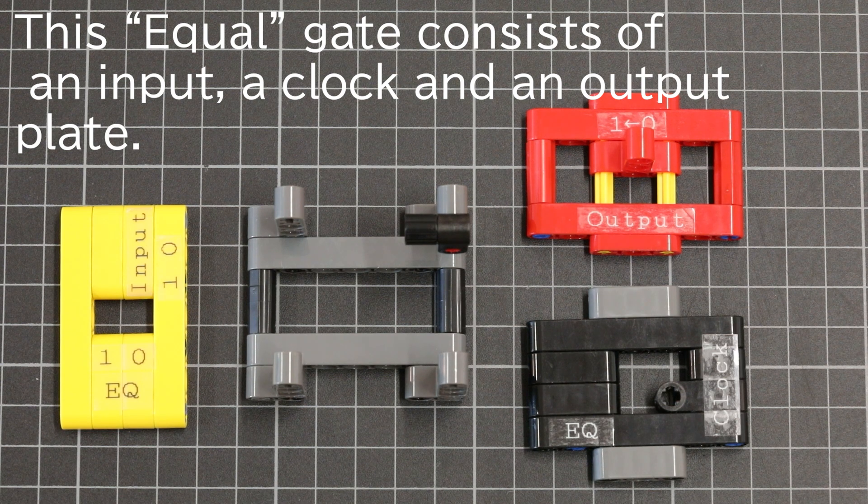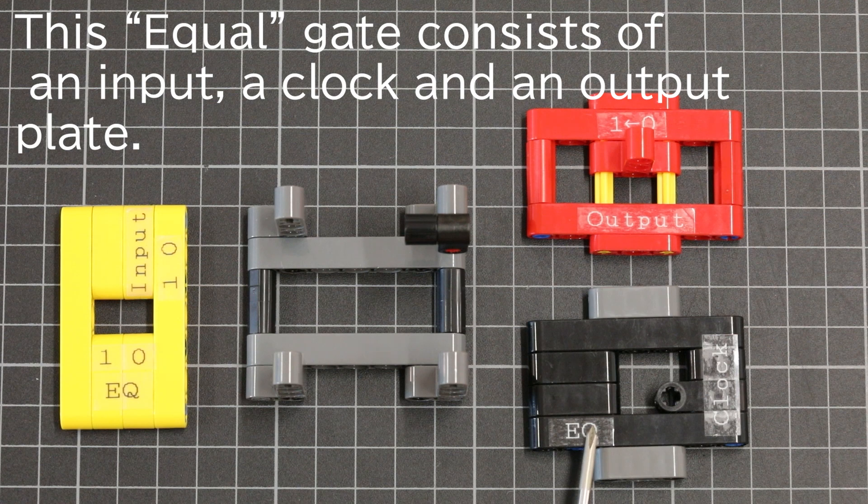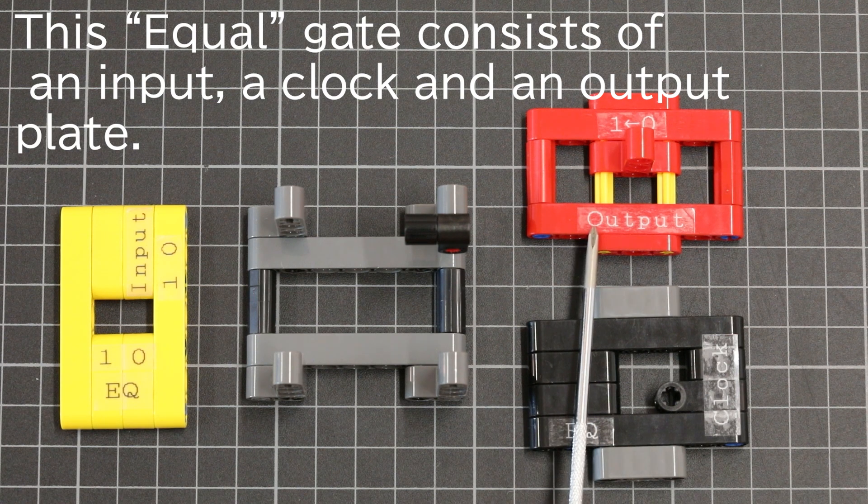This equal gate consists of an input, a clock, and an output plate.